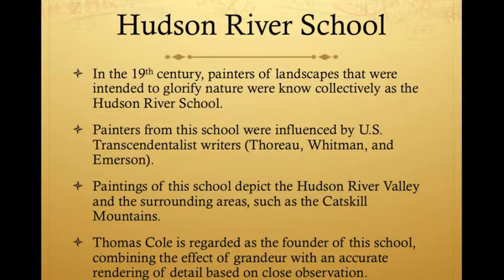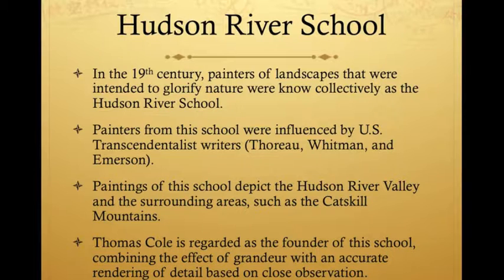In the 19th century, painters of landscapes intended to glorify nature were known collectively as the Hudson River School. Painters from this school were influenced by U.S. Transcendentalist writers such as Thoreau, Whitman, and Emerson. Painters of this school depict the Hudson River Valley and the surrounding areas, such as the Catskill Mountains.